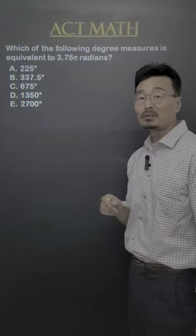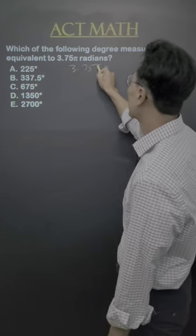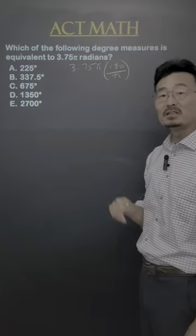I want to show you how to do this question without a calculator. Normally, you would take that 3.75 pi times 180 over pi to change the radian into degree.